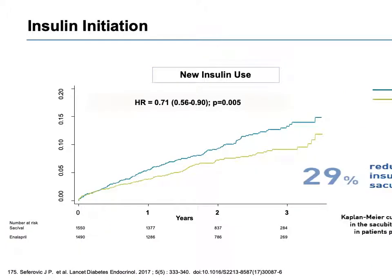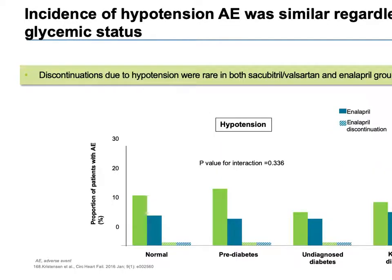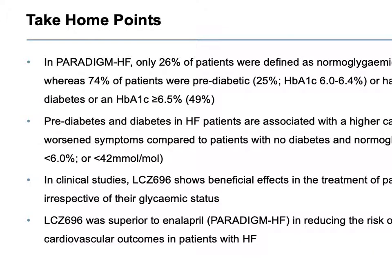Insulin use forms a significant portion of the diabetic patient population. With progression on sacubitril/valsartan, patients using insulin saw a further reduction of nearly 29% in insulin requirements. Regarding hypotension, which is a common adverse effect in such patients, this molecule does not appear to significantly worsen it.